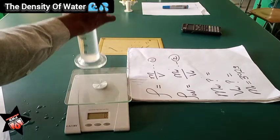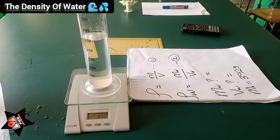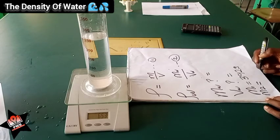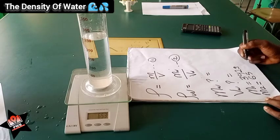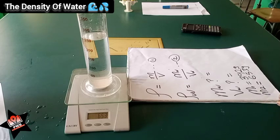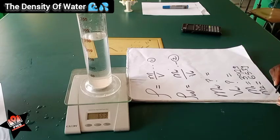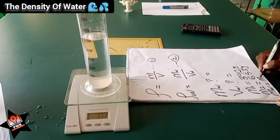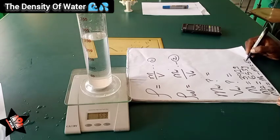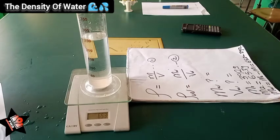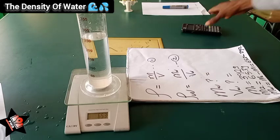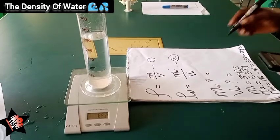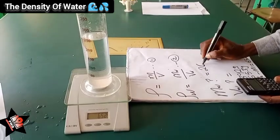Next, we are going to pour water into the measuring cylinder and weigh it again. This time, we have m2 — the mass of the measuring cylinder with water content. We write m2 equals 653 grams. The mass of the water, mw, equals m2 minus m1, which is 653 minus 392. So the mass of the water we are using here is 261 grams.